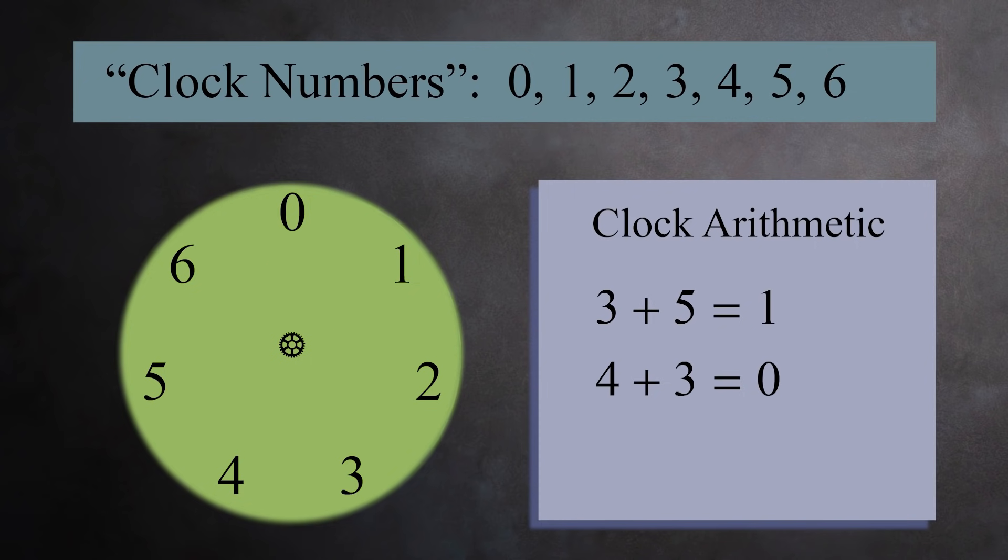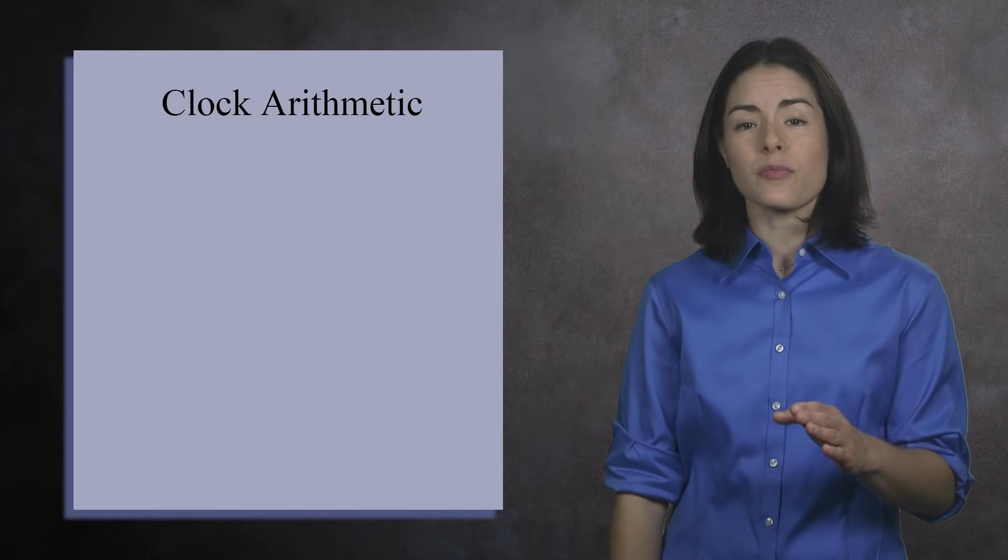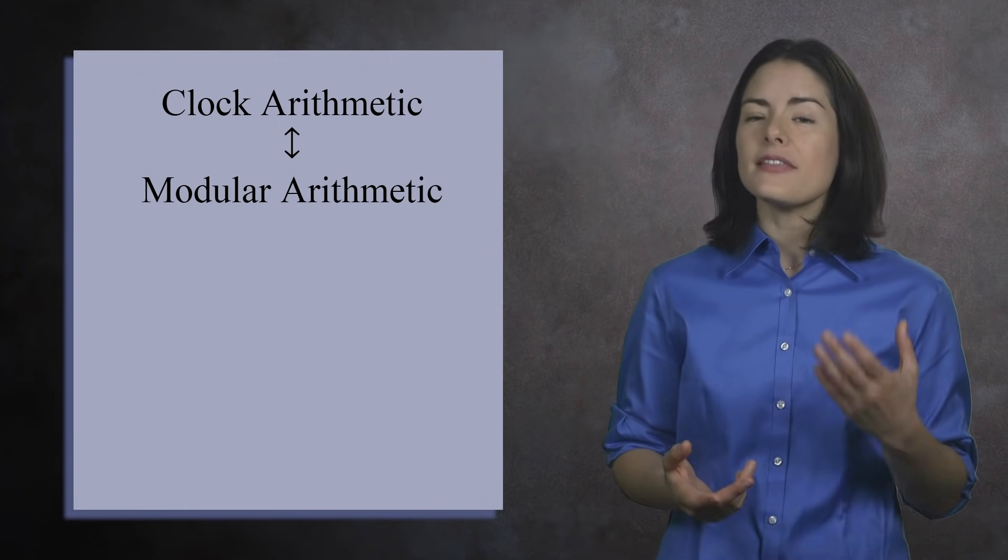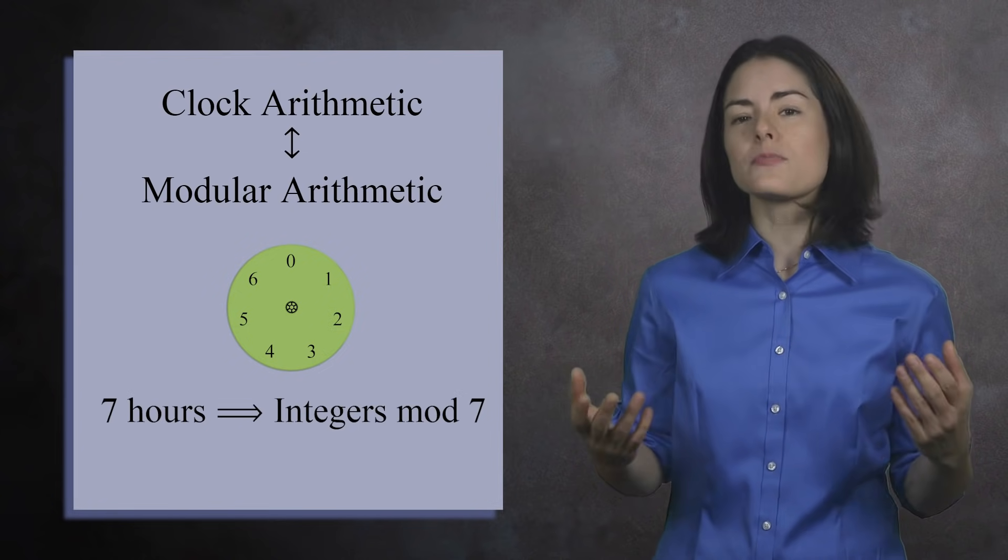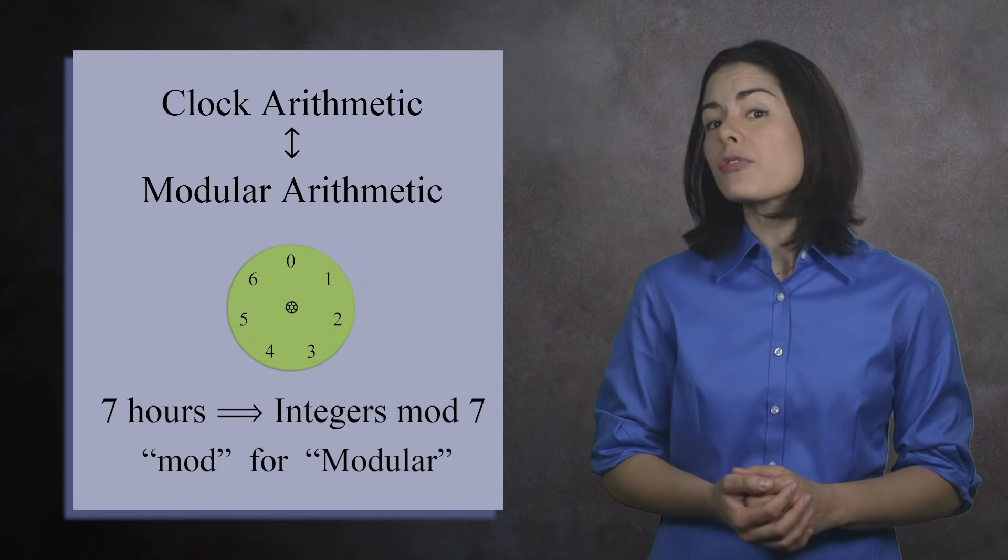You can subtract as well. To find one minus three, you start at one and move counterclockwise three hours. You end up at five, so one minus three equals five. Clock arithmetic is also called modular arithmetic. In the example we just saw, there are seven hours, so we call them the integers mod seven. Mod is short for modular.